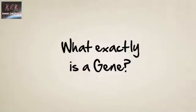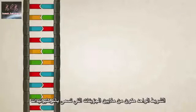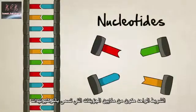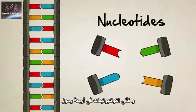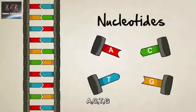What exactly is a gene? Each one of our cells contains 46 strands of DNA. A single strand is made of millions of particles called nucleotides, and these nucleotides come in four different types, which scientists have labeled A, C, T, and G.